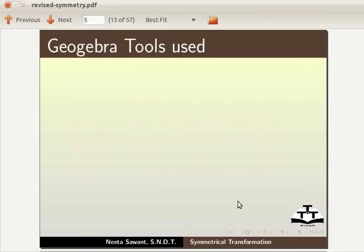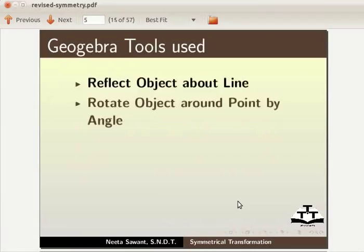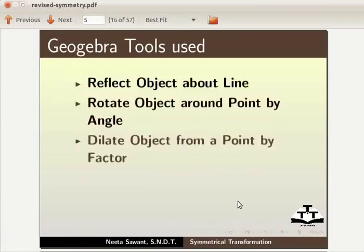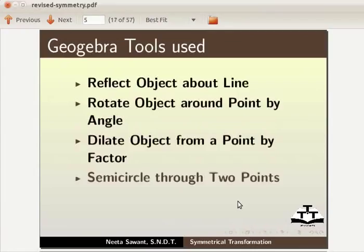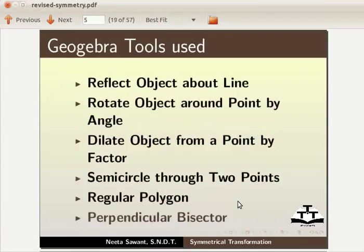We will use the following GeoGebra tools: reflect object about line, rotate object around point by angle, dilate object from a point by factor, semicircle through two points, regular polygon, and perpendicular bisector.